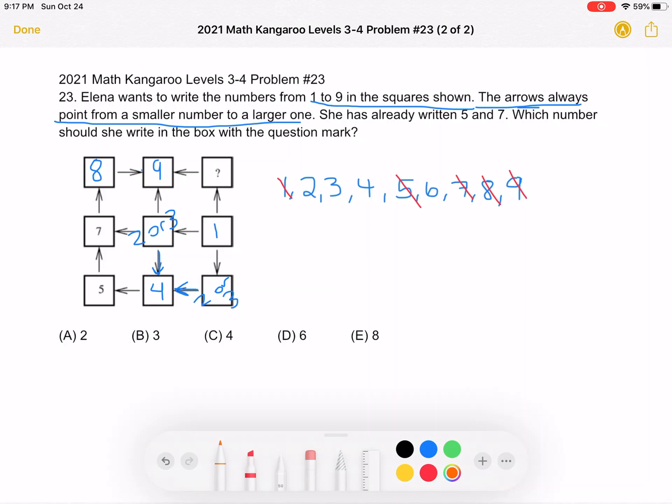Because the problem just asks us for what number she should write in the box with the question mark. That is this box right here. So far we know the 2, 3, and 4 are all accounted for. So the number she must place in the box with the question mark is 6. And that is answer choice D.